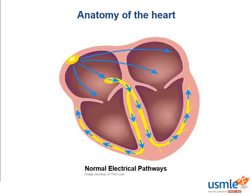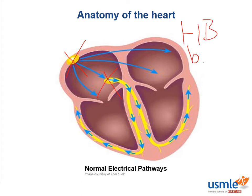Now let's take a look at the AV and SA nodes. The SA node is commonly supplied by the RCA via the SA nodal artery. The AV node is commonly supplied by the PDA, or the posterior descending artery, which branches off of the RCA. So with that, if somebody has an RCA infarct, we might expect to see significant bradycardia or heart block due to SA or AV nodal dysfunction, because the SA node is the pacemaker setting the pace at 60–100 beats per minute.